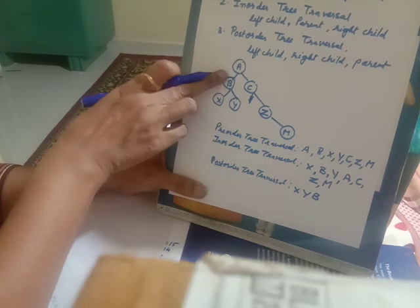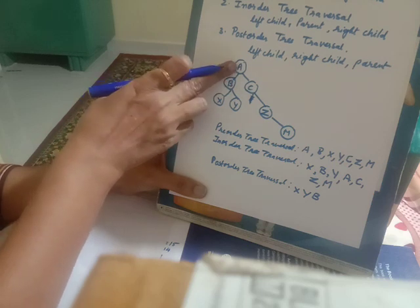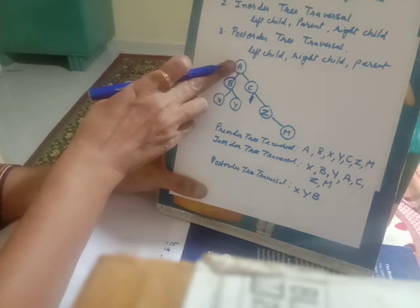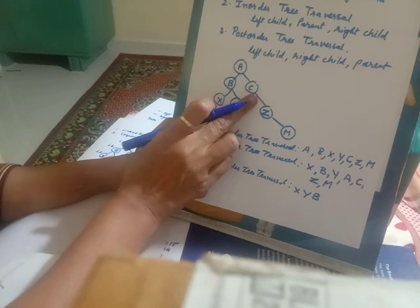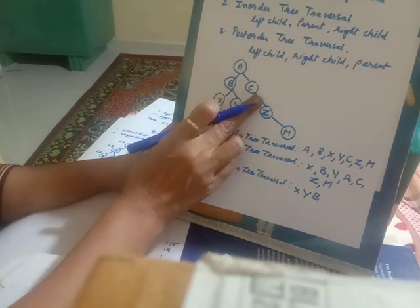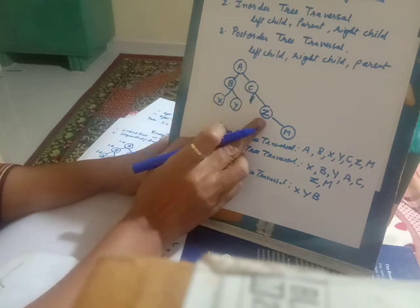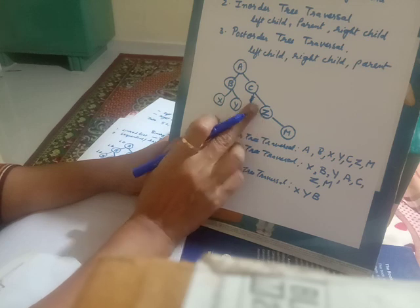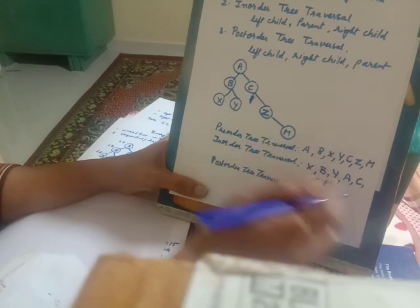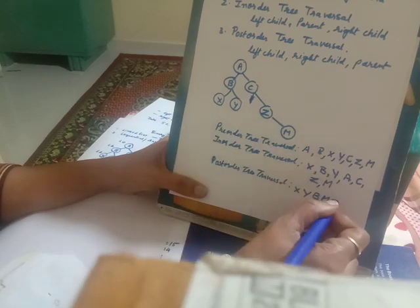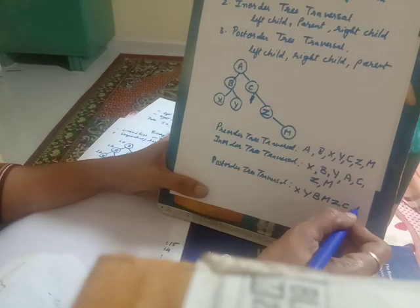Now both left and right children of B are processed, so we can process parent B. The left child of A is processed. We cannot print A yet because it still has a right child. Moving towards C, which is a parent — it cannot be processed until Z is processed. Z cannot be processed until M is processed. So first M is processed, then its parent Z, then its parent C, and finally the root node A.